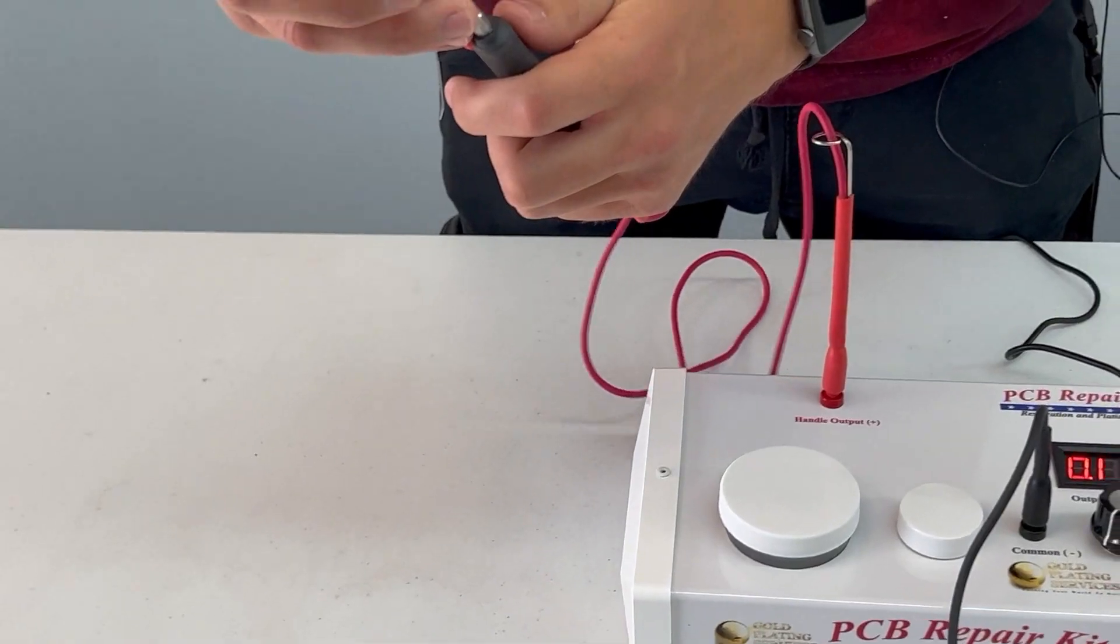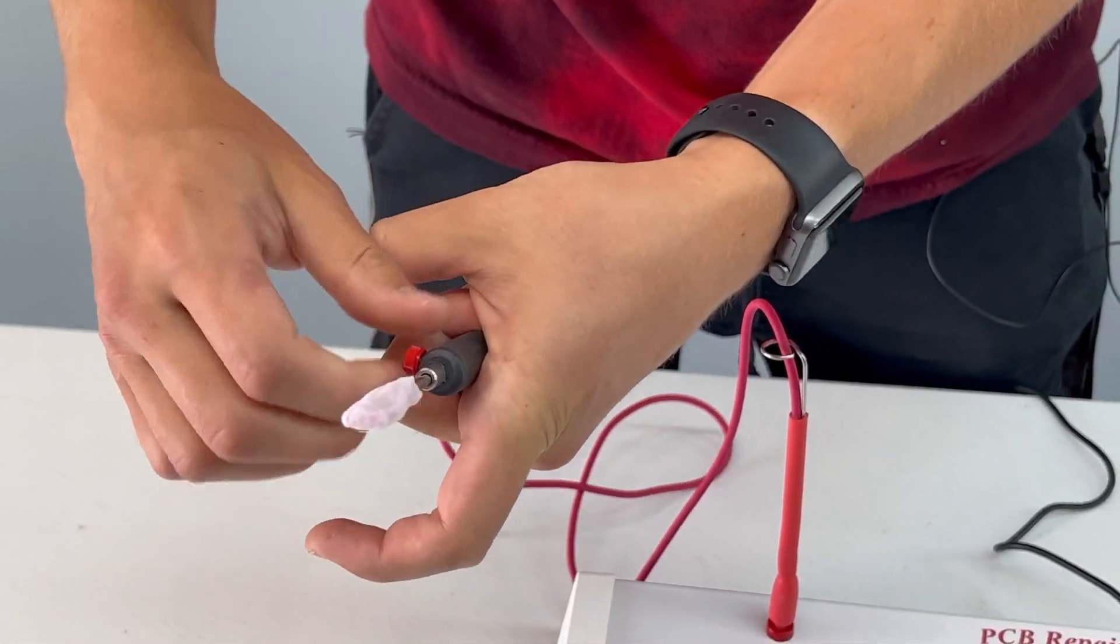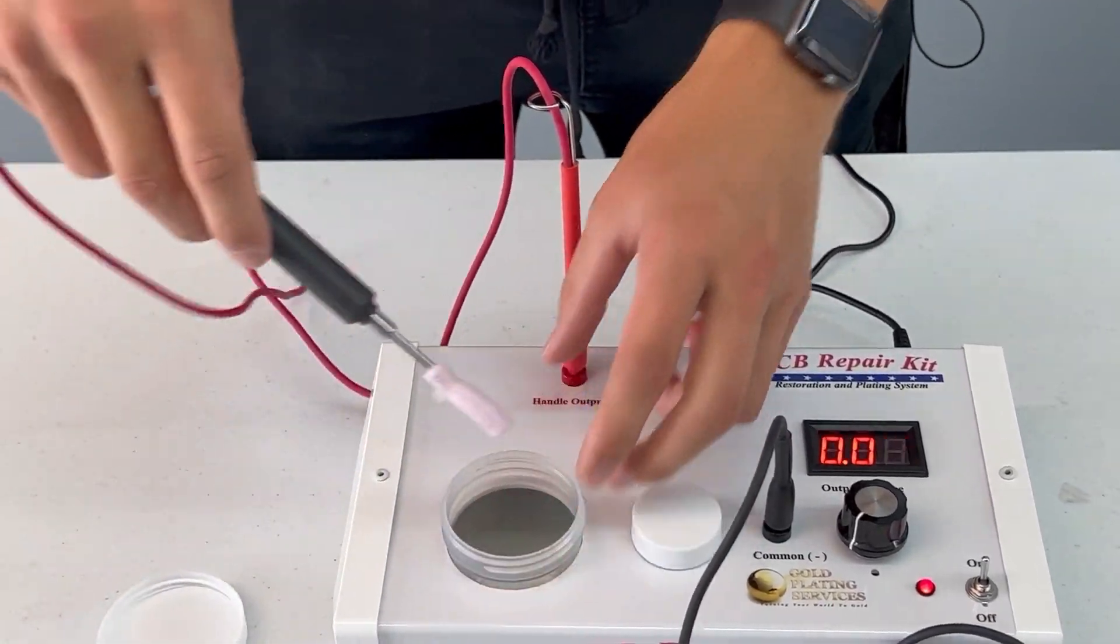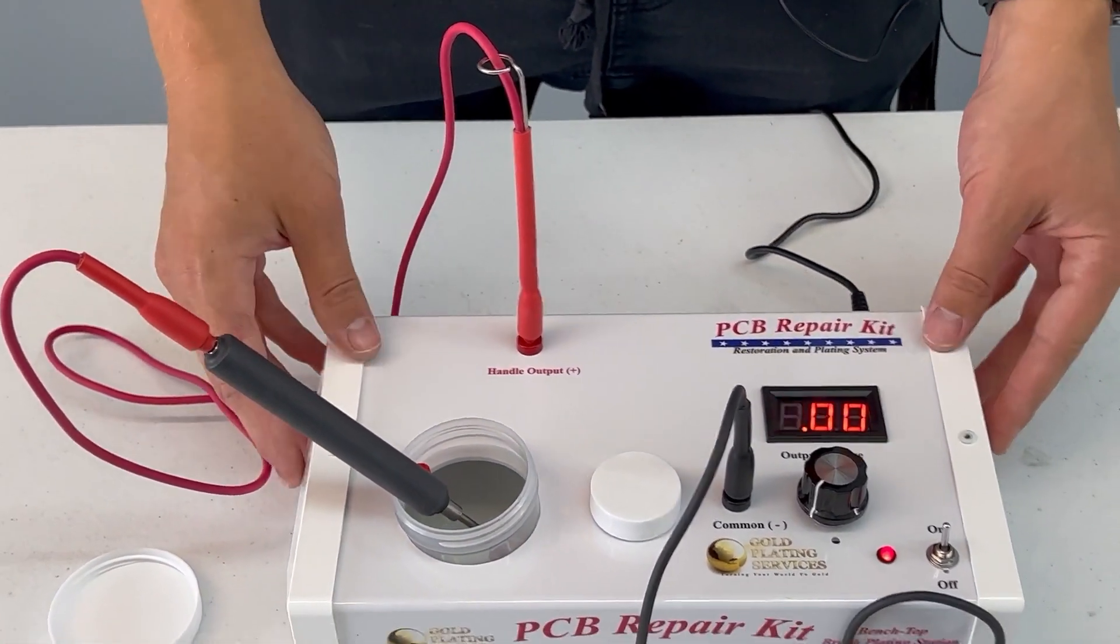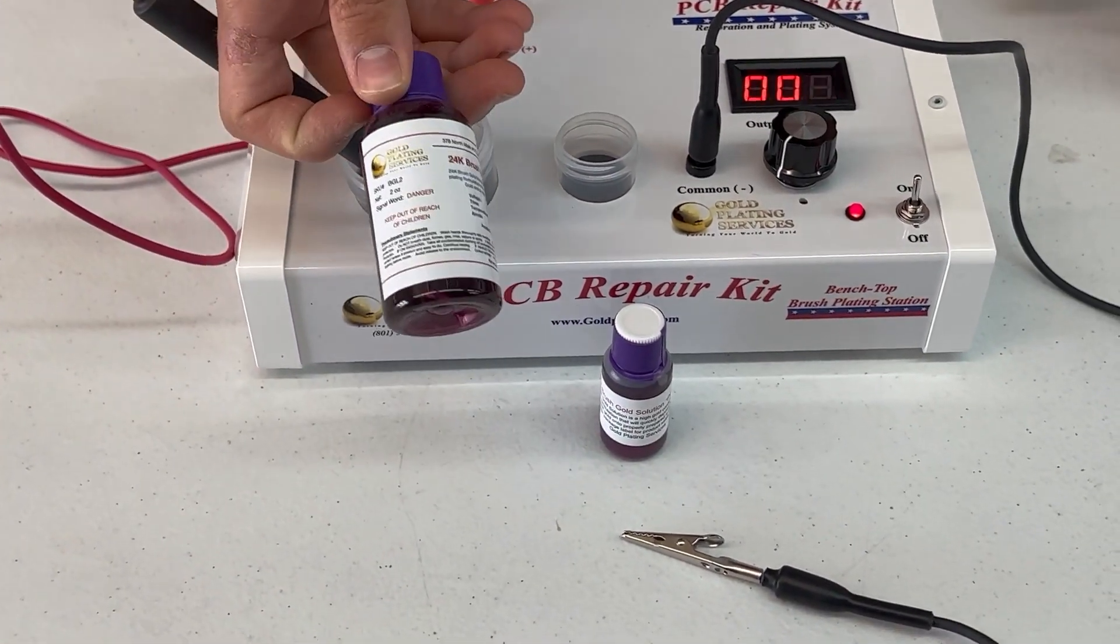Put that right into there. There we go. You can open up either one, whatever gold you're wanting to plate with, and that is the machine all set up.